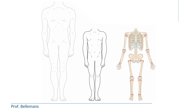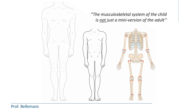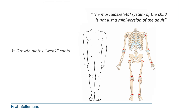It is important to realize that the musculoskeletal system of a child is not just a mini version of the adult. Therefore, what can go wrong in the knee of a child is completely different to what occurs in the knee of an adult. The reason is that a child is still growing, and therefore the bones in the body contain growth plates, which are weak spots. Also, the tissues in the body of the child are still immature, and therefore not as strong as in the adult, which may easily lead to overload, such as on the cartilage.